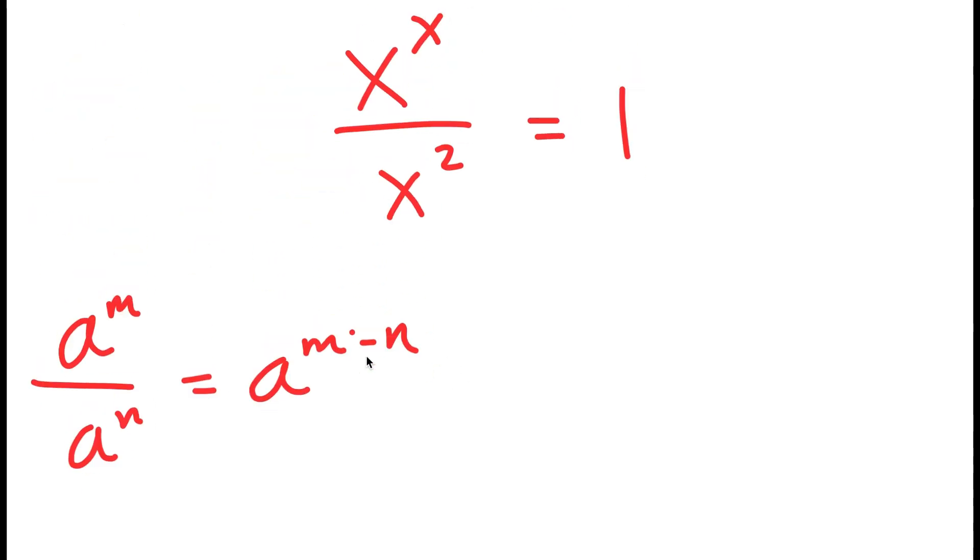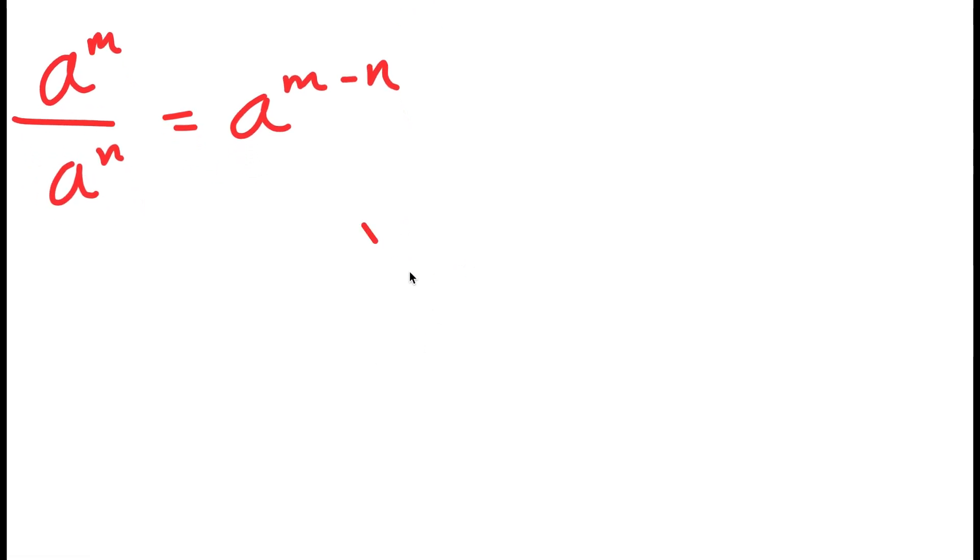So in this case, I have x to the power of x over x to the power of 2, and it's going to equal x to the power of x minus 2, which is equal to 1.